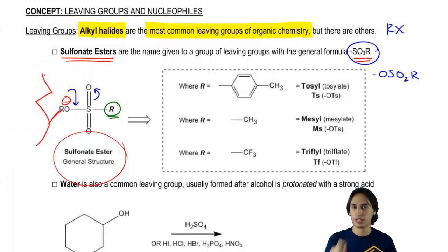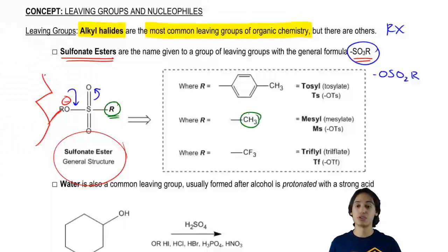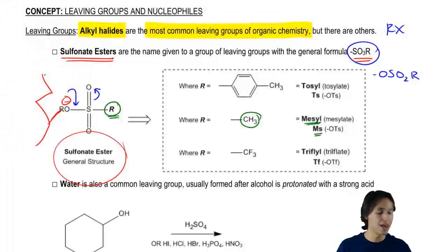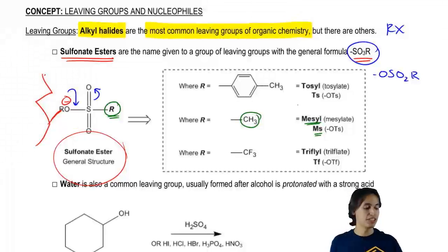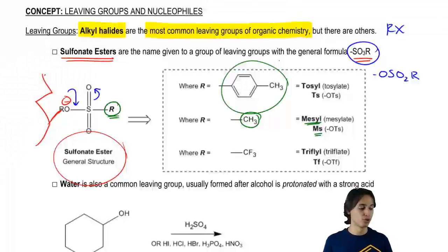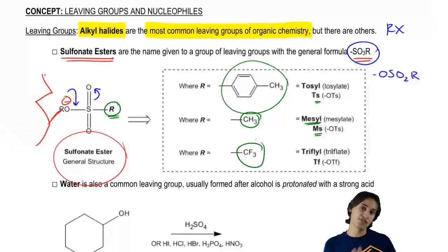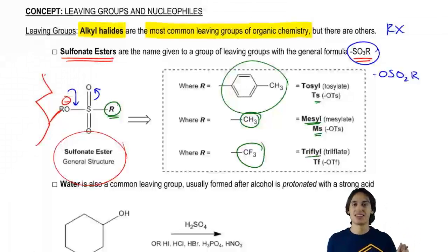If the R group is just a methyl group, that's called a mesylate — or mesyl group — abbreviated MS. If it's a benzene ring with a methyl group on it, that's called a tosylate, abbreviated TS. And if it's a carbon with three fluorines instead of three hydrogens — a CF3 group — then that's called a triflyl, or a triflate once it has the negative charge.